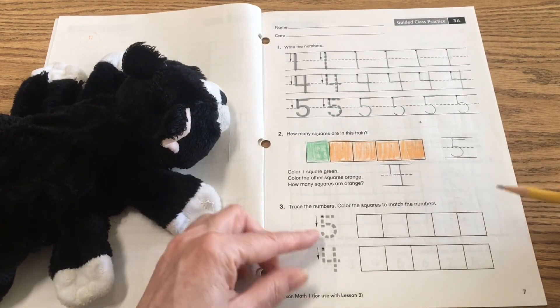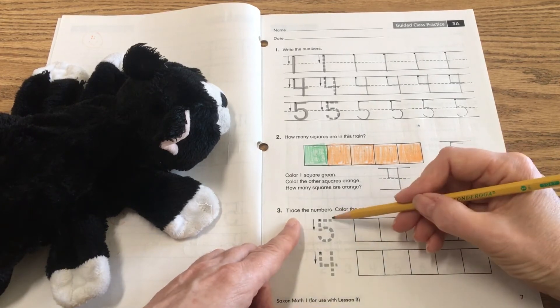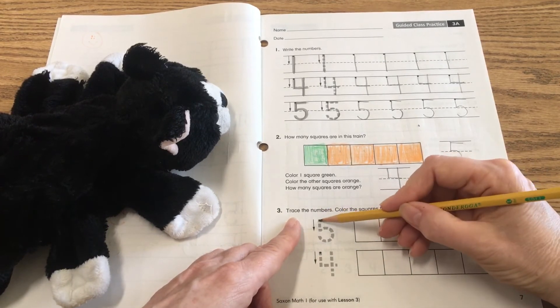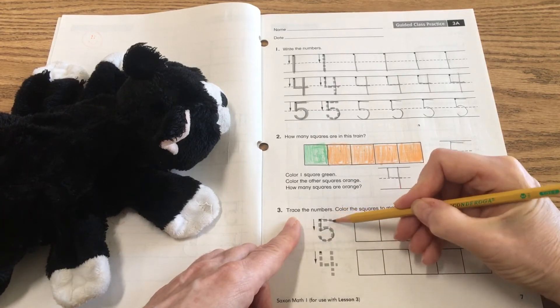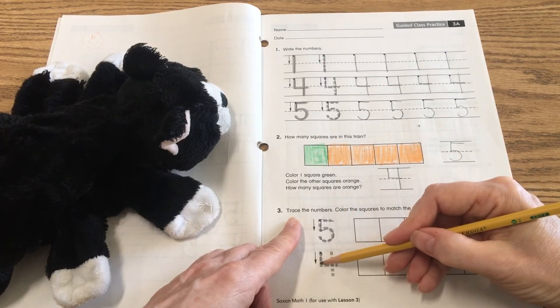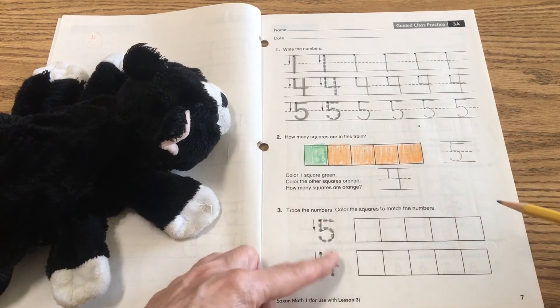At the very bottom, we have two trains at the bottom of the page at number three. It says, trace the number. So I'm going to trace the number. This is our five. Okay. So there's its neck and its belly. And there's its hat. And for the four, go down, cross, go over, lift, and go down. Five and four.